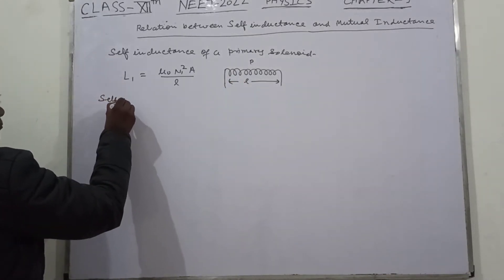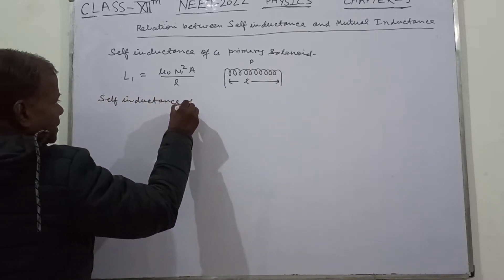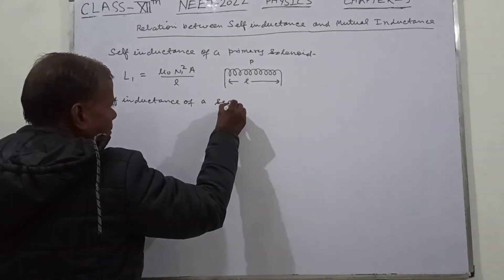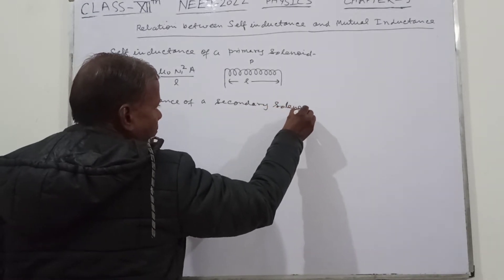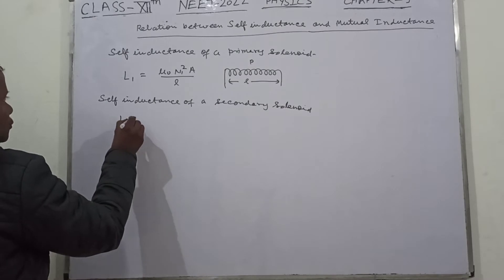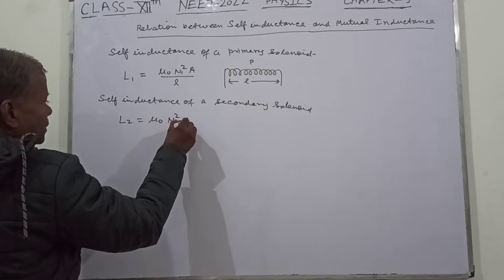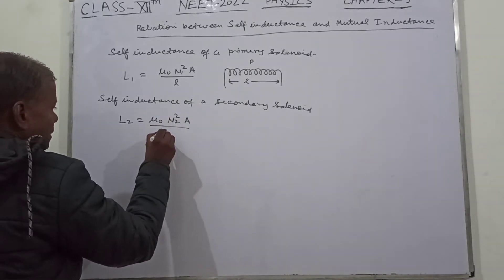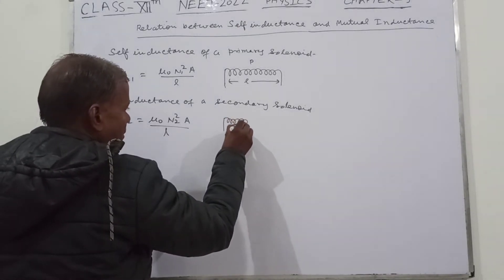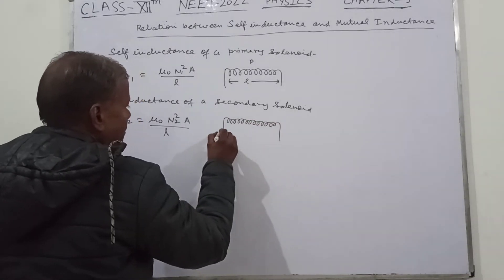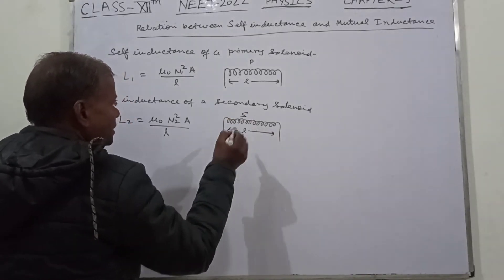Similarly, the self-inductance of a secondary cylinder is L2, equal to mu naught n2 squared a upon l. Here we have the secondary coil, and the length is the same for both coils.